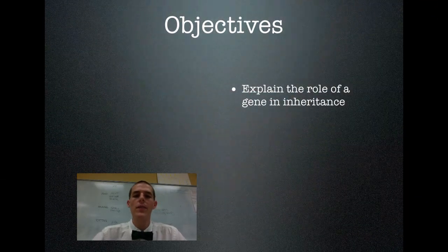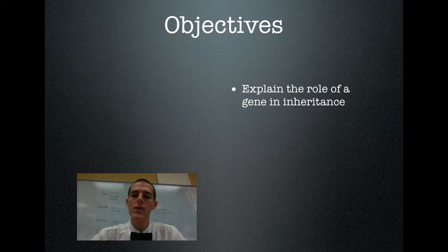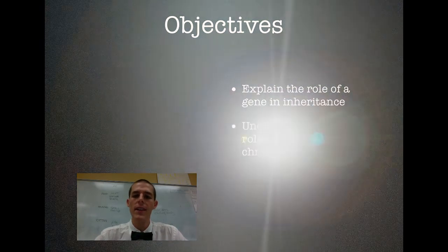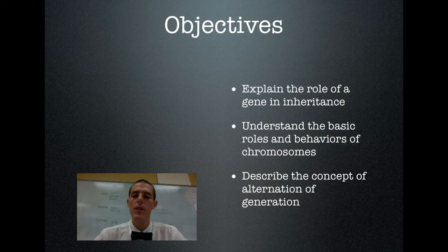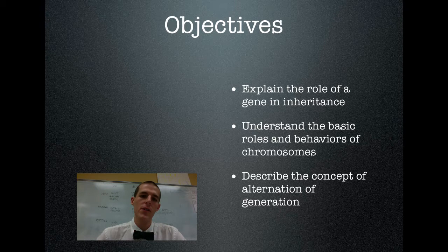So let's go ahead and get into it with our objectives. First thing you need to be able to know or do by the end of this video is to be able to explain the role of a gene in inheritance. Second thing, understand the basic roles and behaviors of chromosomes. And finally, you need to be able to describe the concept of alternation of generation.